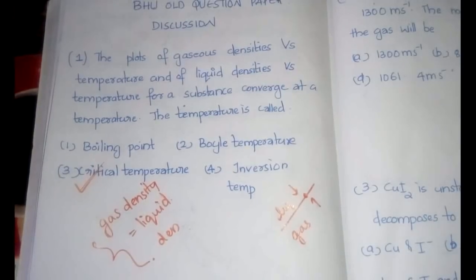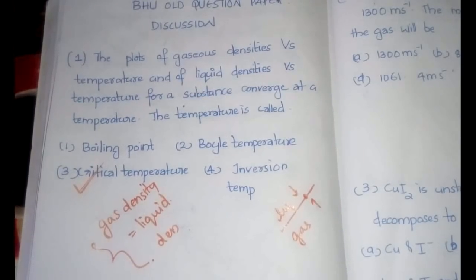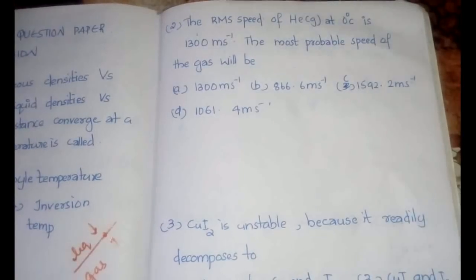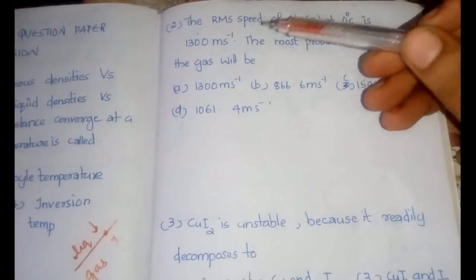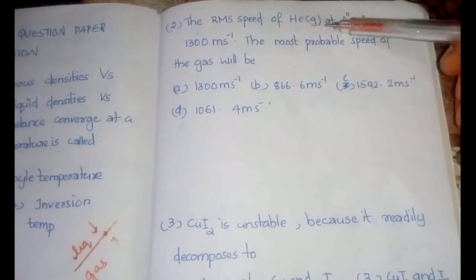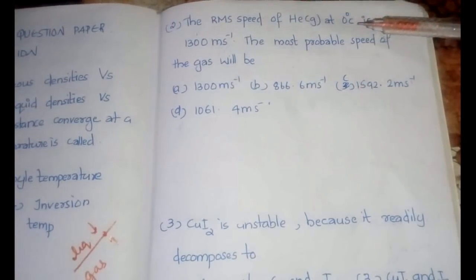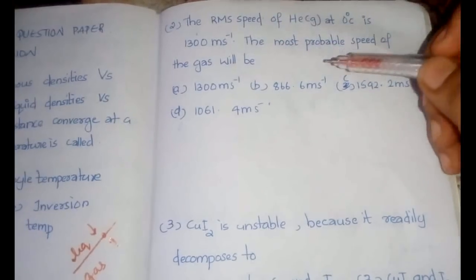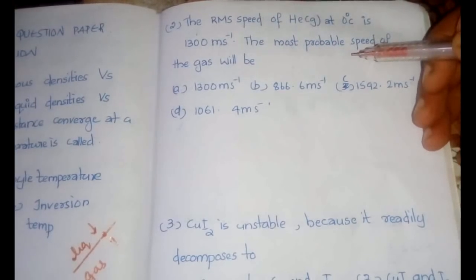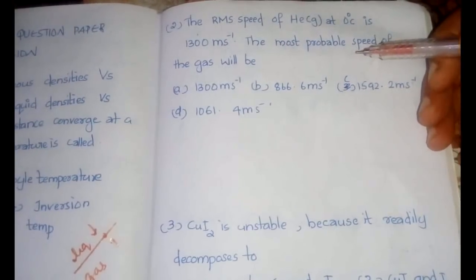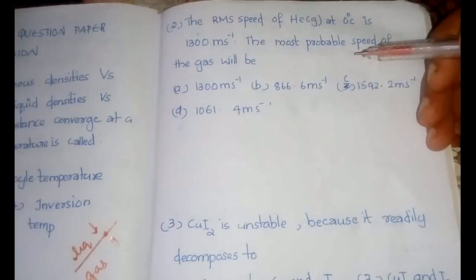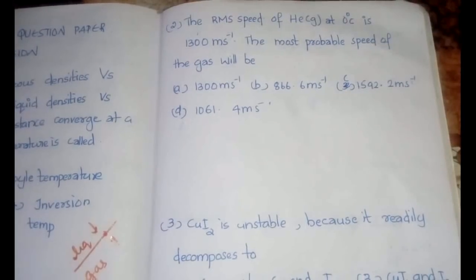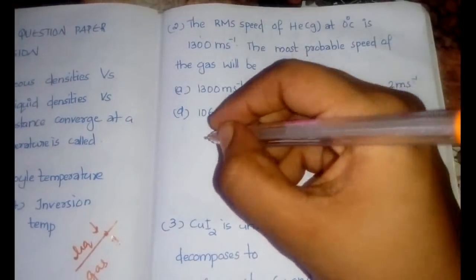The second question: the RMS velocity of helium gas at 0°C is given; we need to find the most probable speed of the gas. There are multiple methods to solve these kinds of questions.